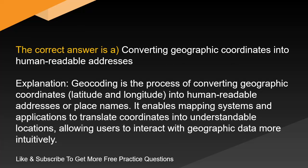The correct answer is A: converting geographic coordinates into human-readable addresses. Geocoding is the process of converting geographic coordinates, latitude and longitude, into human-readable addresses or place names. It enables mapping systems and applications to translate coordinates into understandable locations, allowing users to interact with geographic data more intuitively.